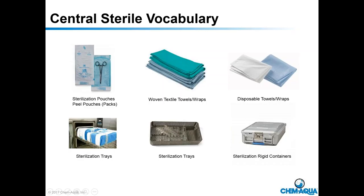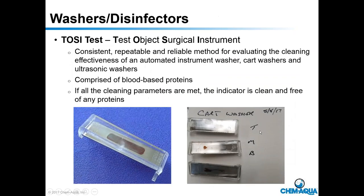Here is a sterilization tray without instruments — you can see how they can be laid out. They're then either wrapped or placed into a rigid container, sometimes called a casket. The rigid container has vent holes at the top and a piece of filter paper to filter anything coming in.